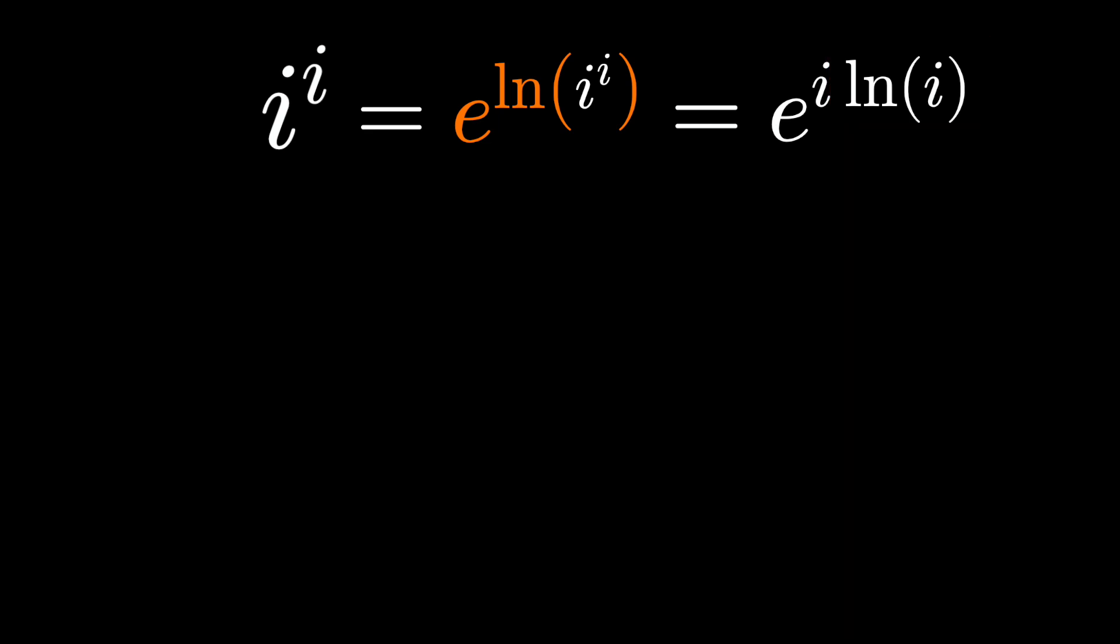To figure this out, let's remember that any complex number can be written in the form a plus bi. You might call this rectangular coordinates or a Cartesian system. Or we can represent it in terms of polar coordinates, drawing this triangle, and using the legs of the triangle, r cos theta and r sine theta, instead of a and b.